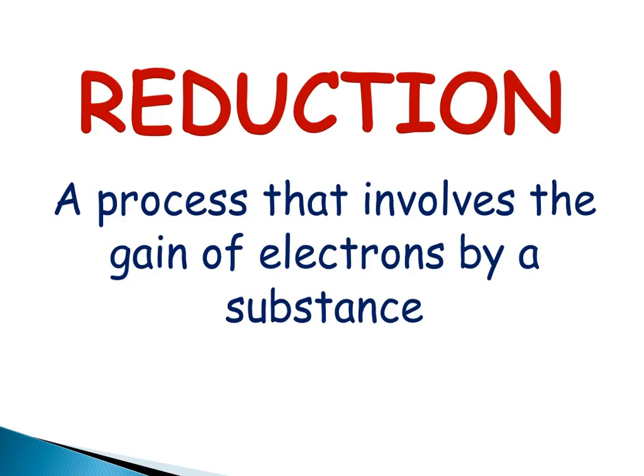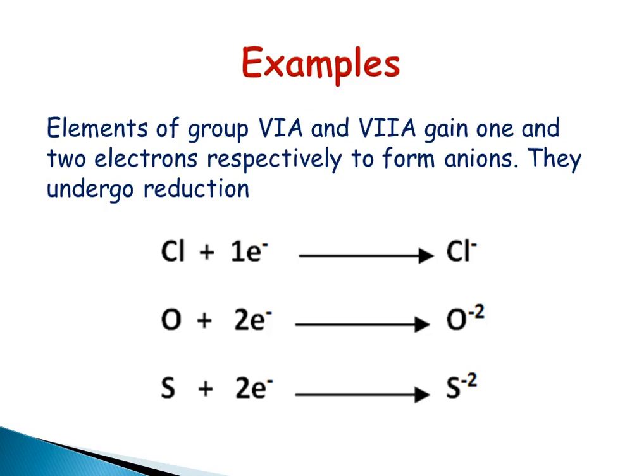Reduction is a process that involves the gain of electrons by a substance. When an element gains electrons, that is called reduction or that element is reduced. Elements of groups 6A and 7A gain one and two electrons respectively to form anions. They undergo reduction.